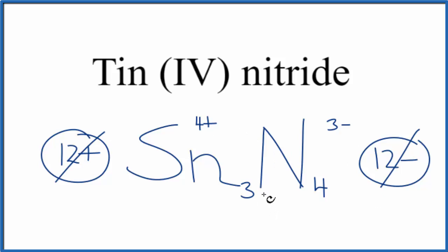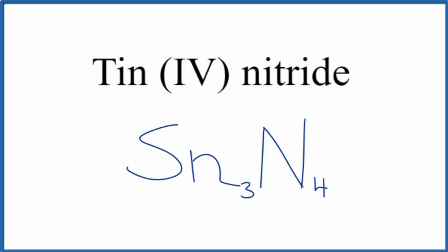This is the correct formula for tin (IV) nitride. Clean it up a bit. And there you have it. The formula for tin (IV) nitride: Sn₃N₄.